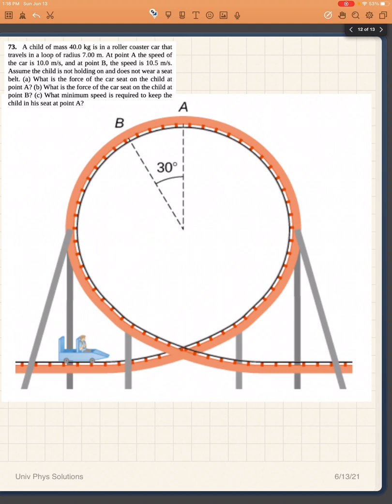All right, let's work problem 73 from OpenStax University of Physics chapter 6. We have a child on a roller coaster ride going on the trajectory shown. We are asked to find the force of the car seat on the child at point A.